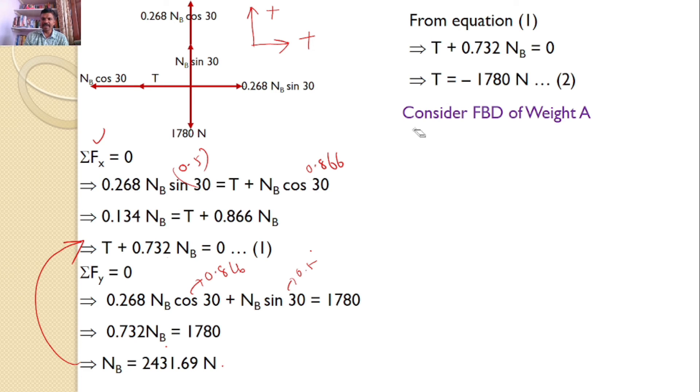Now, let us consider the free body diagram of weight A. The various forces acting on weight A are: the first one is self-weight, and there may be a reaction force here. Let that reaction force be NA, and the body will try to move, there may be a frictional force 0.4 into NA towards right side. This is a prismatic bar, and the tension in the prismatic bar just now we calculated, that value is minus 1780.